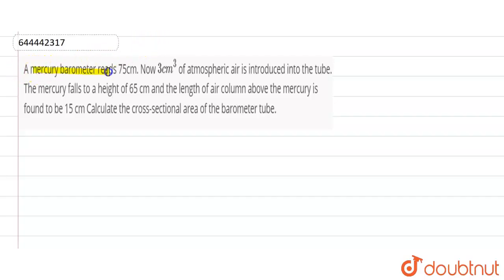We have a mercury barometer which reads 75 centimeters. Now, 3 cubic centimeters of atmospheric air is introduced into the tube.